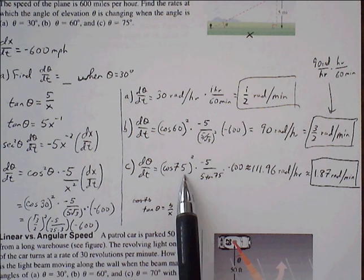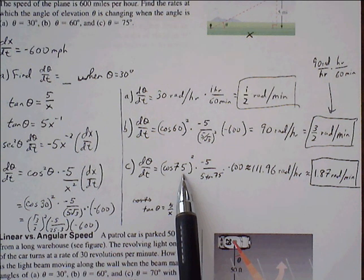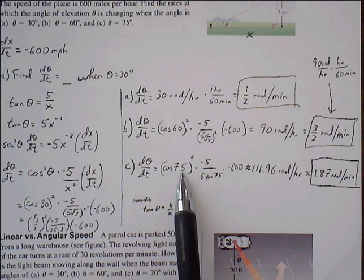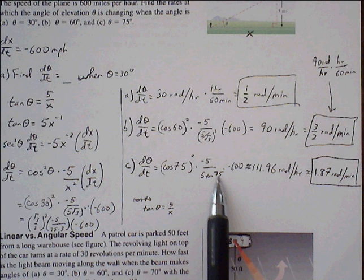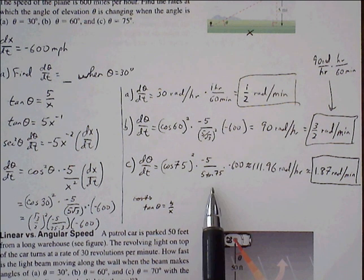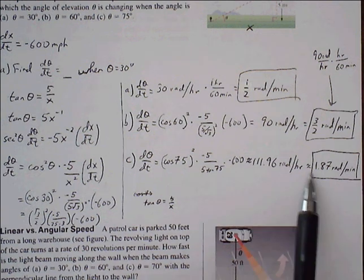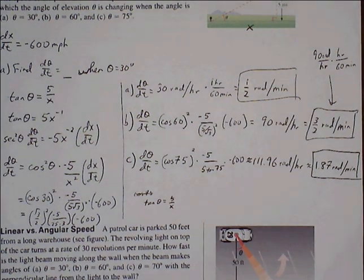For part c, 75 is not an angle that we can use easily, so we have to use our calculator for this. So cosine of 75 plugs in 5, tangent of 75 is the representative value for x. And use our calculator to find 1.87 radians per minute.